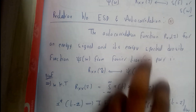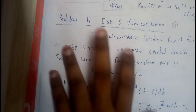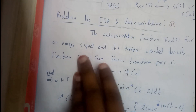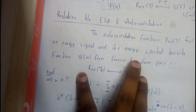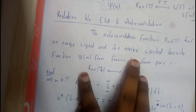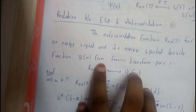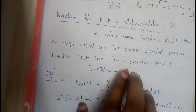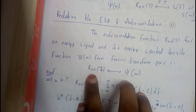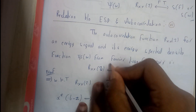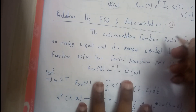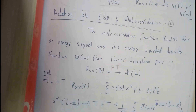The autocorrelation function Rxx of Z for an energy signal and its energy spectral density function Psi — their Fourier transform relation is given by: Rxx of Z, Fourier transform, is equal to Psi of Z.